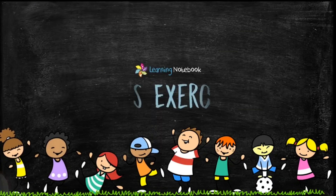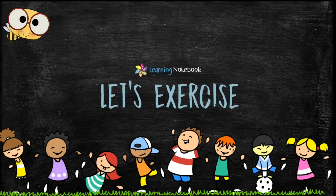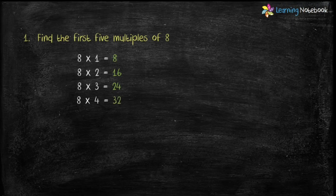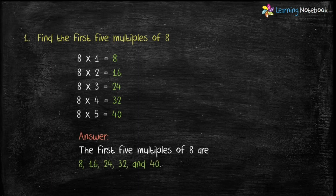Now let's do an exercise based on these properties. Question one: find the first five multiples of eight. To find the first five multiples of eight, multiply eight by 1, 2, 3, 4, and 5. The answer is the first five multiples of eight are 8, 16, 24, 32, and 40.